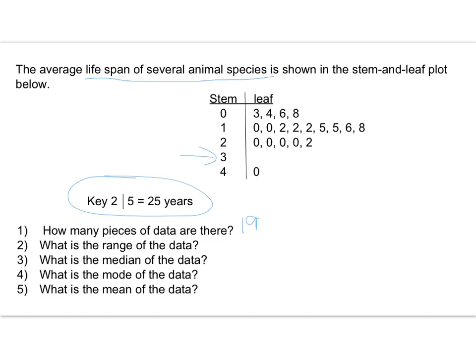The range means the biggest number, 40, and the smallest number, 3. We're going to go ahead and subtract those. So 40 minus 3 gives us a range of 37 years.